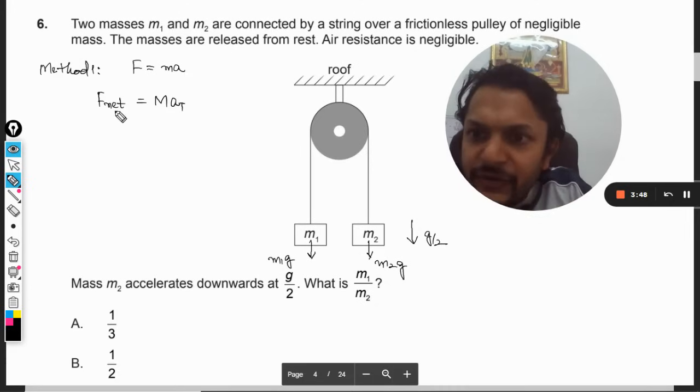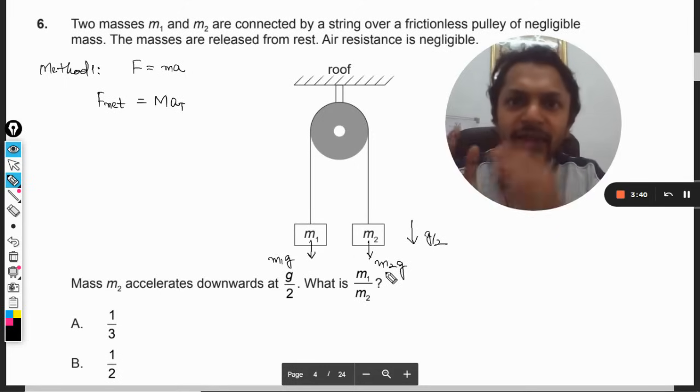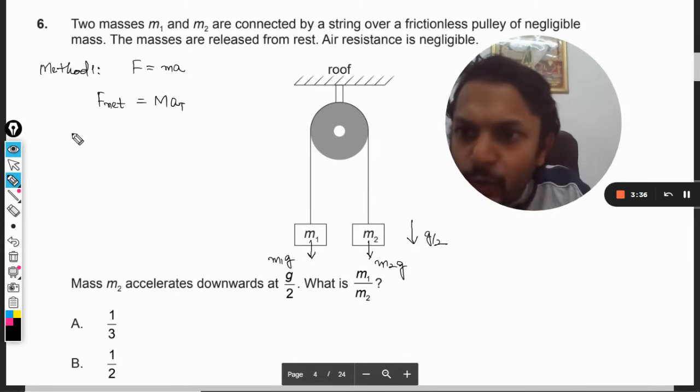This m2 force is downward and m1 force is also downward, but m2g is more than m1g. So what is the net force? The net force will be m2g minus m1g.